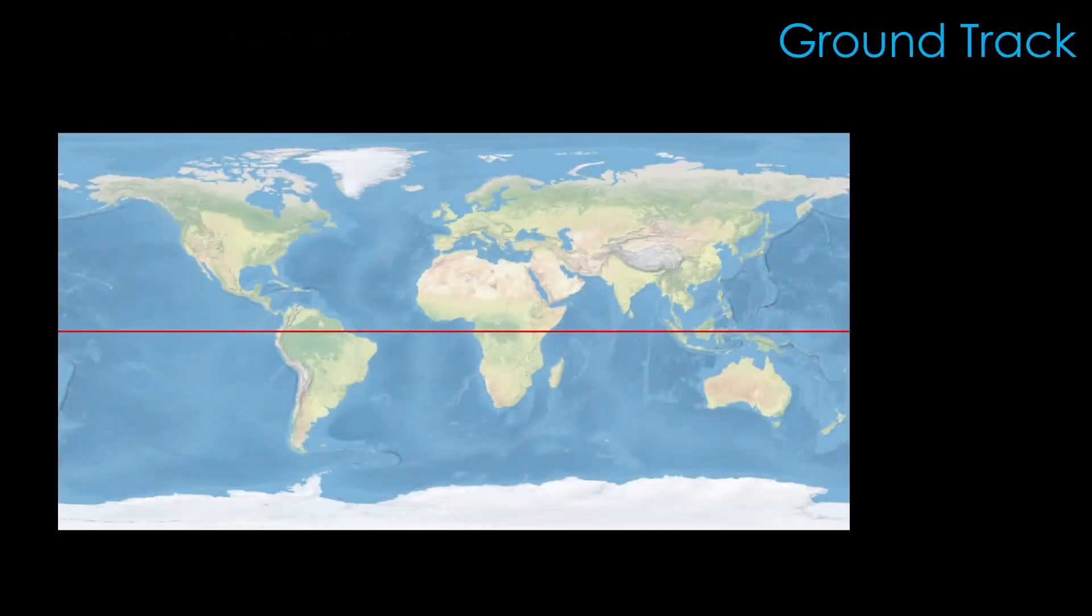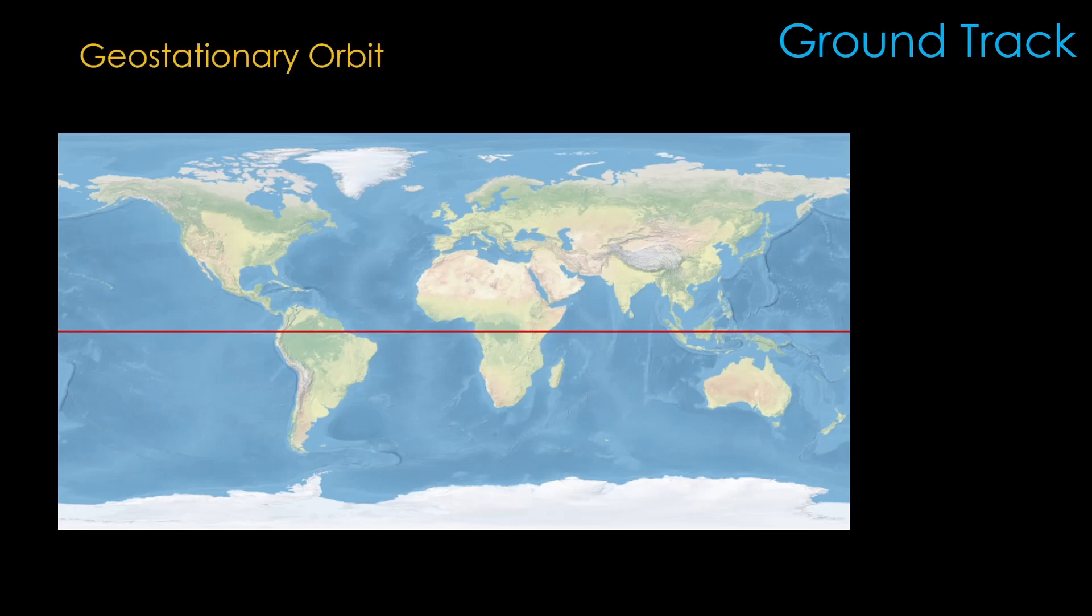There are two big factors that drive the choice of inclination. The first is ground track. Ground track simply defines the path that the satellite travels over the Earth's surface. Let's say we want to provide TV service over North America. We need a fixed position so that our customers know where to point their satellite dishes, so we choose a geosynchronous orbit that has zero inclination, otherwise known as a geostationary orbit. The satellite orbits at the same rate that the Earth turns, so from our ground perspective it looks like it's just parked over a spot on the equator.